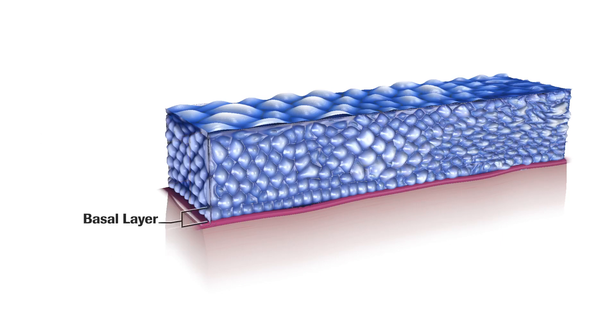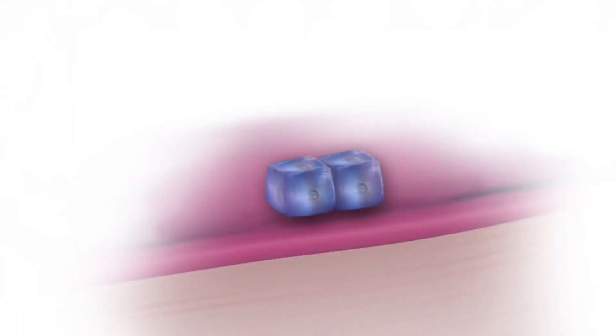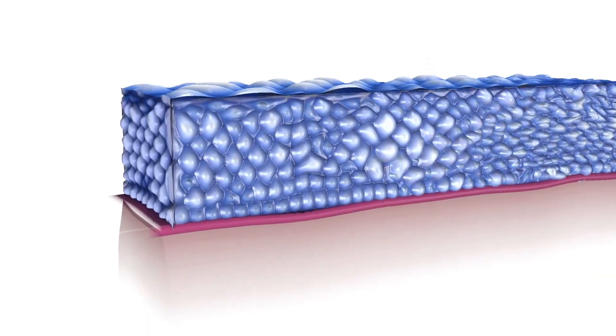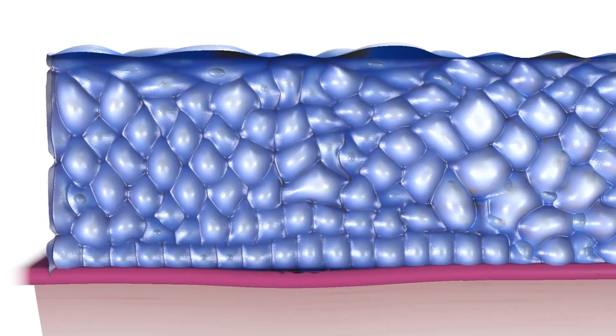The basal cell layer houses the stem cells, which replicate and undergo cell division and eventually mature into squamous epithelial cells as they migrate to the upper epithelial layers.